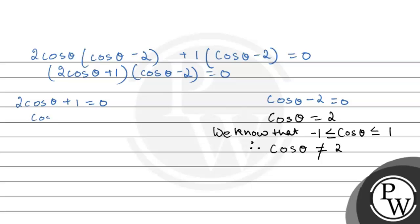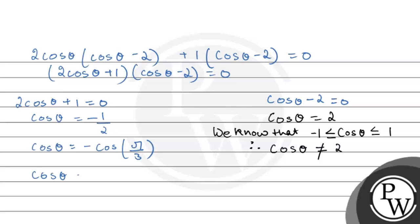From equation 1, we get cos theta equals minus 1 by 2. We can write this as cos(pi by 3), and since cosine is negative we use cos(pi minus pi by 3), which gives cos theta equals cos(2pi by 3).